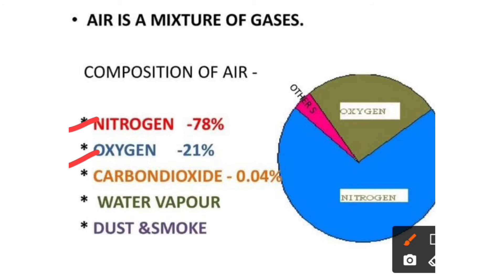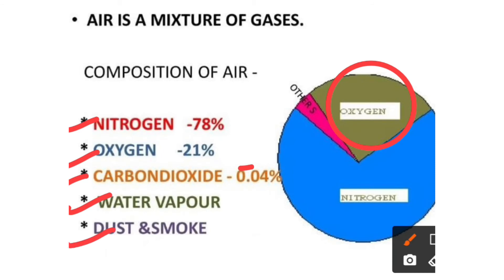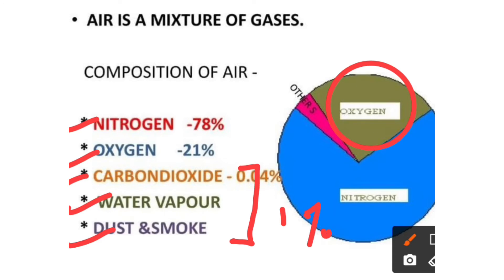Oxygen is 21% of air. Next is carbon dioxide, water vapor, and dust and smoke — these rest things cover nearly 1% of air.